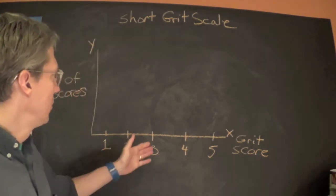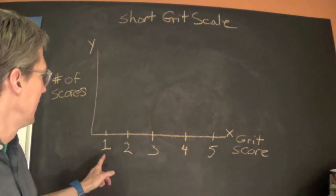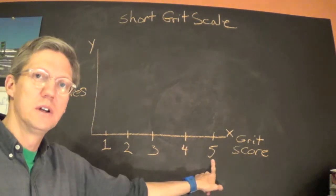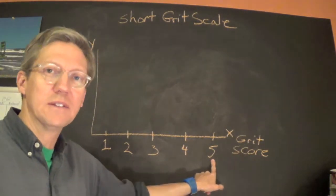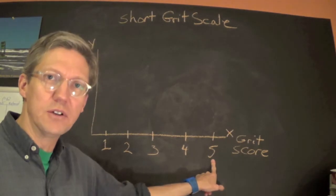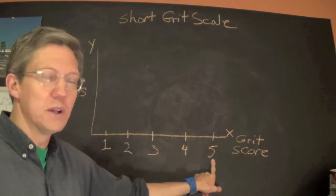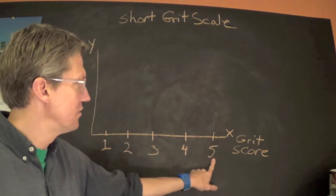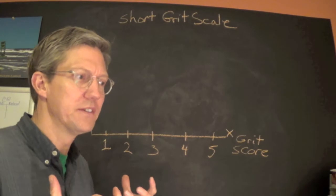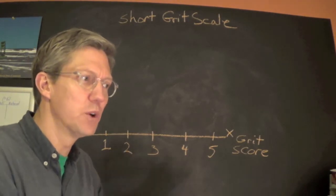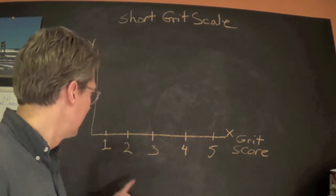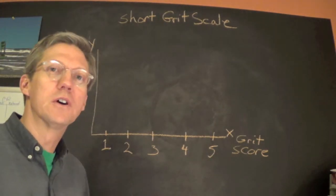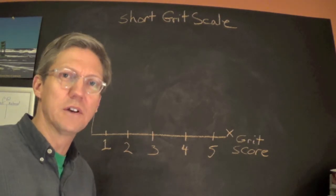To start plotting: the highest score on the Short Grit Scale is 5. Grit, by the way, is indicating persistence of effort. The lowest score would be 1. So if somebody scored a 5 on the grit scale, this is somebody who really puts a lot of effort and persists with a project until completion. Somebody with a 1 would be somebody who would lose interest early, give up on it when it gets difficult, and so forth.